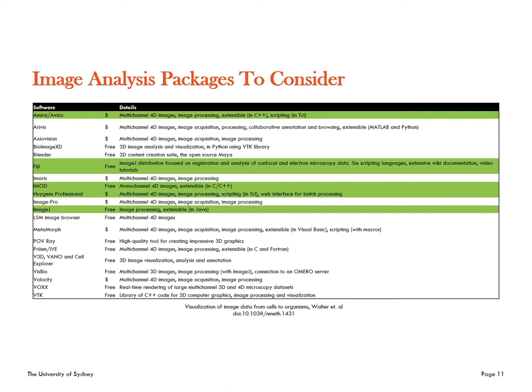In contrast, ImageJ or Fiji is a totally free software package which you can download and customize to do any type of analysis you want. As it is free and open source, you can download the base code and alter it. Researchers all around the world have written and freely released plugins that will perform any type of analysis you can dream of. Our team and most image analysis specialists from around the world really like this software due to the cost, but also because it is totally customizable.